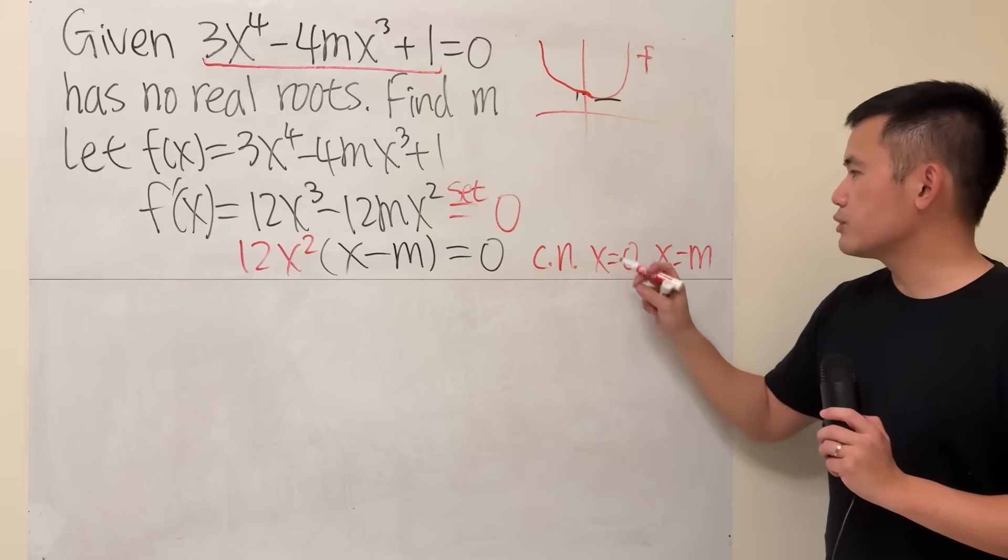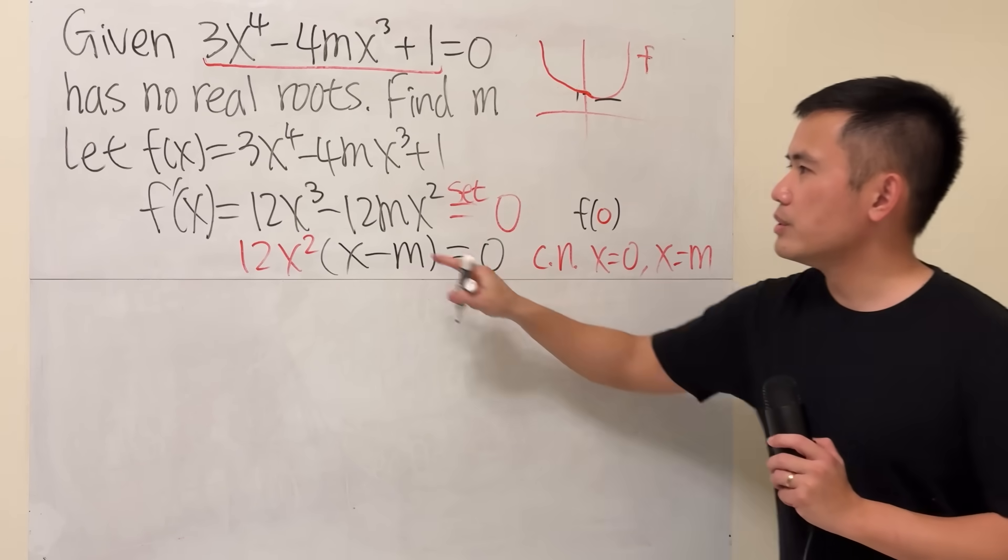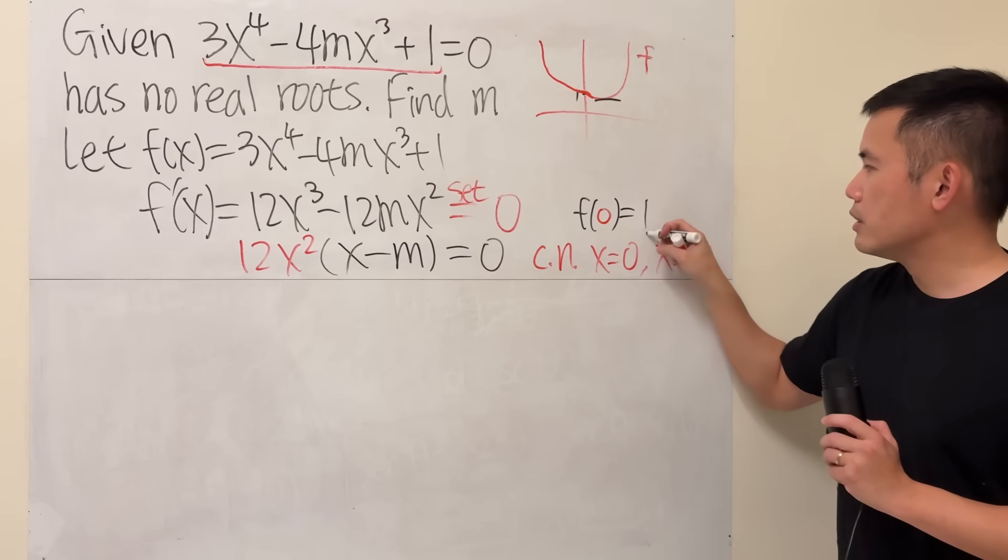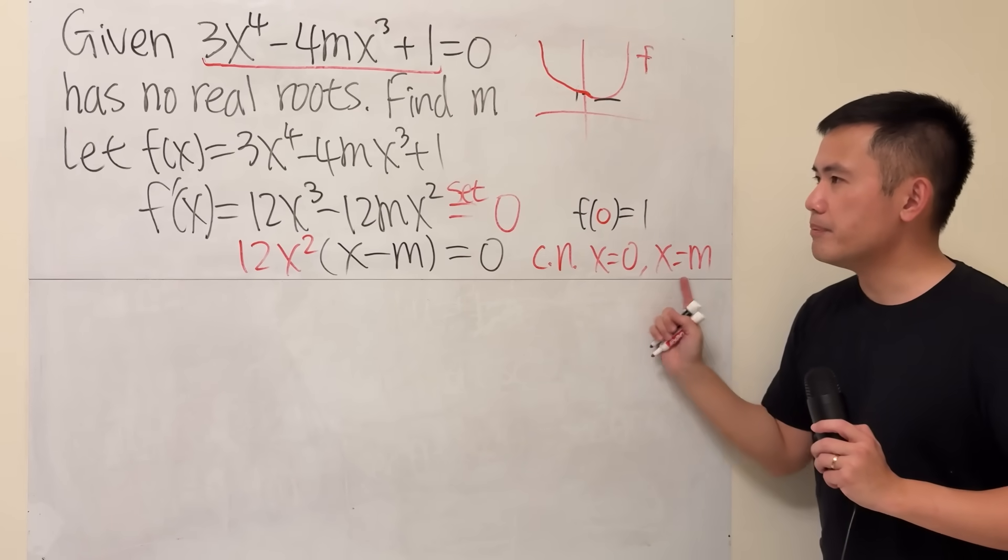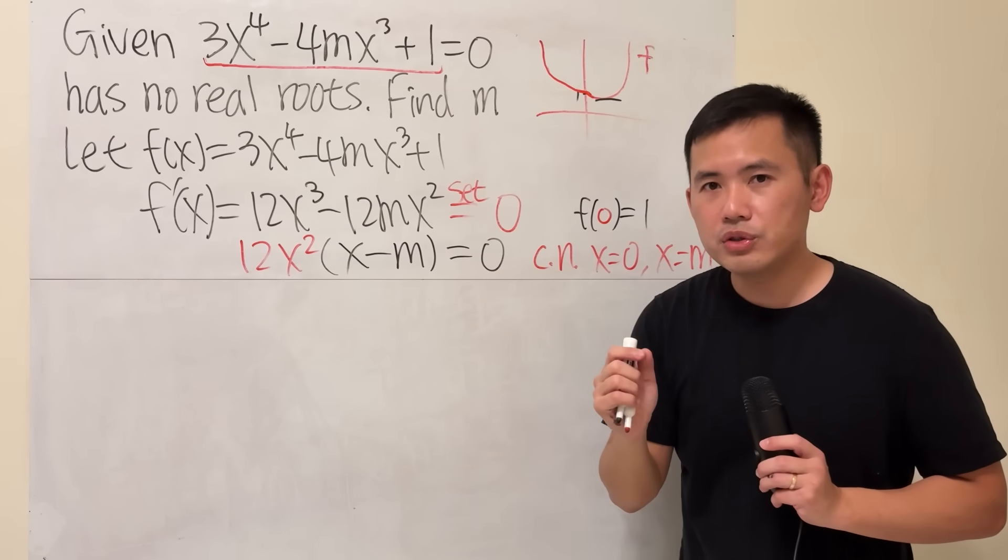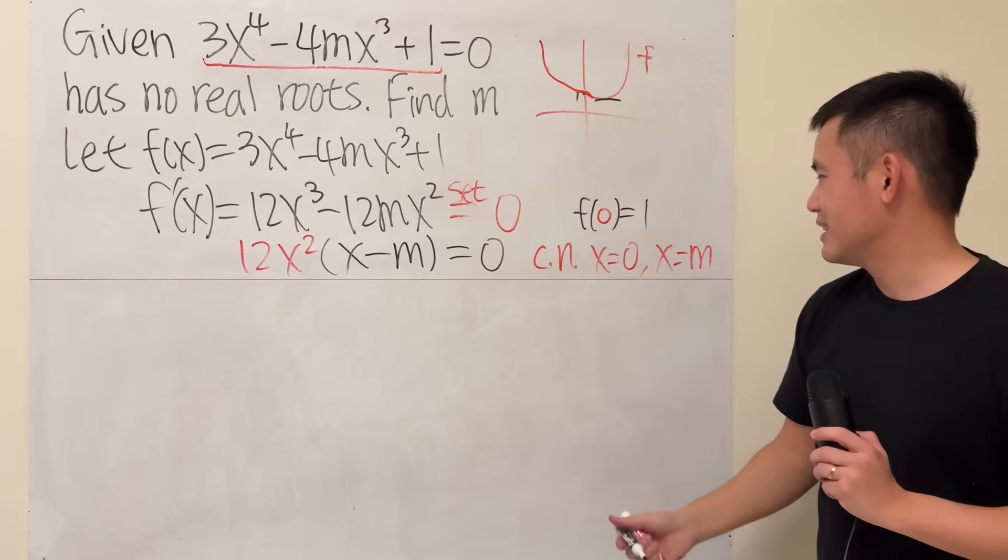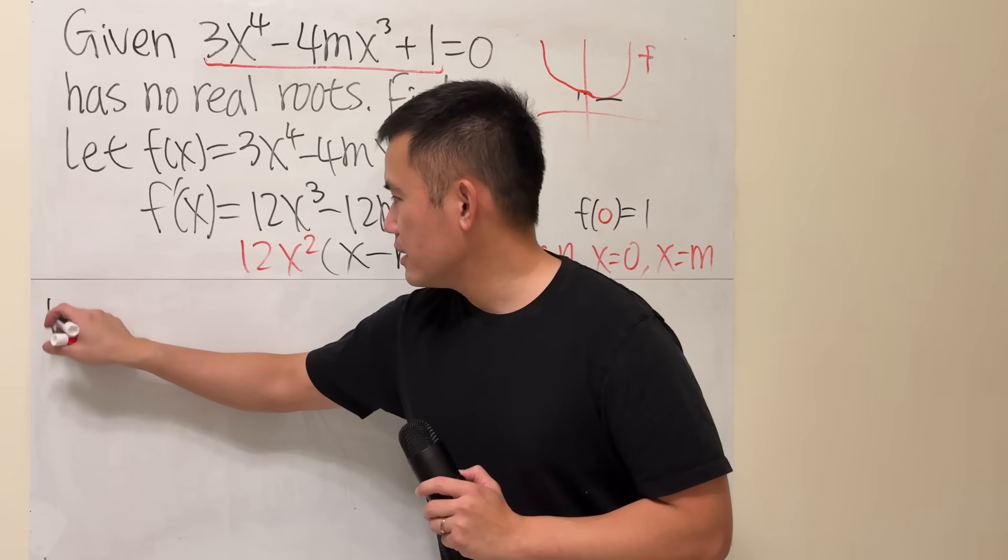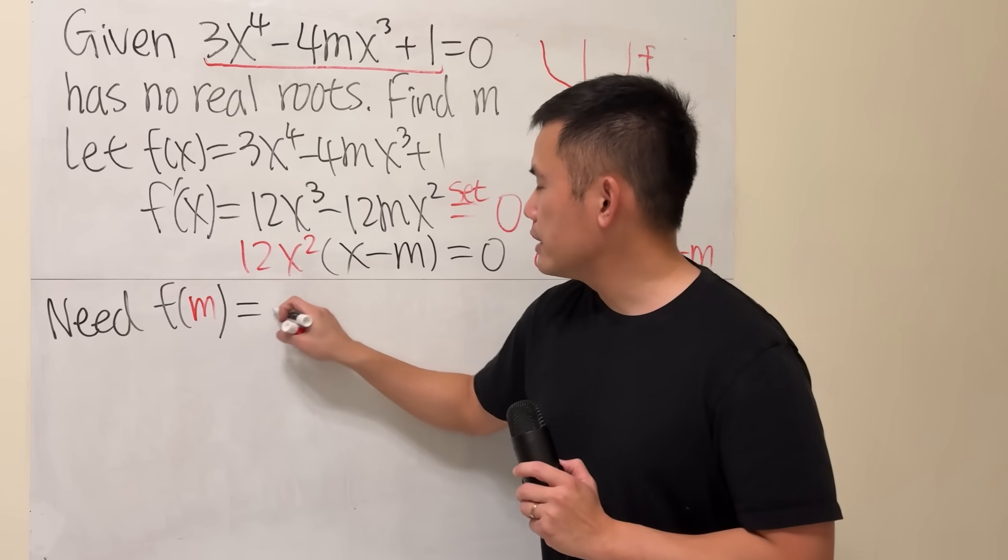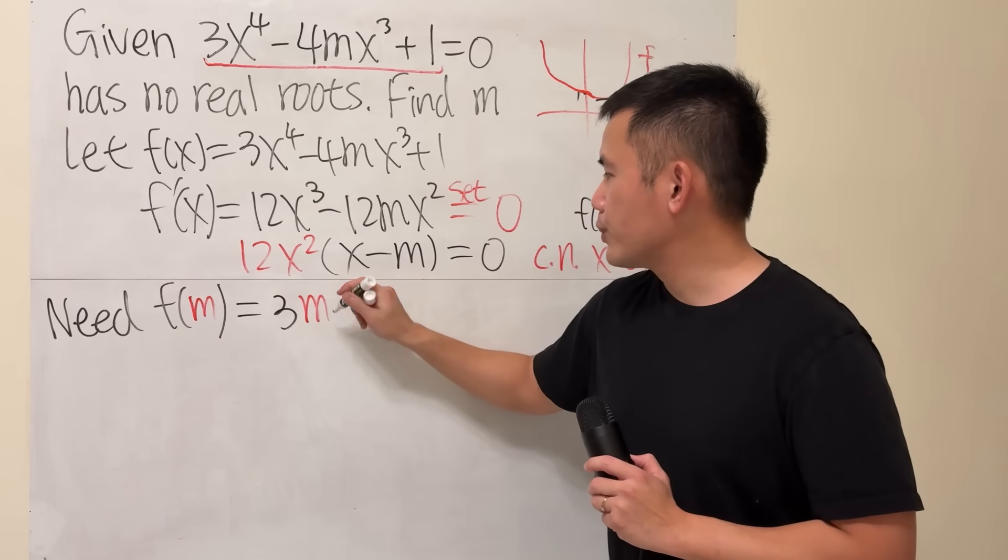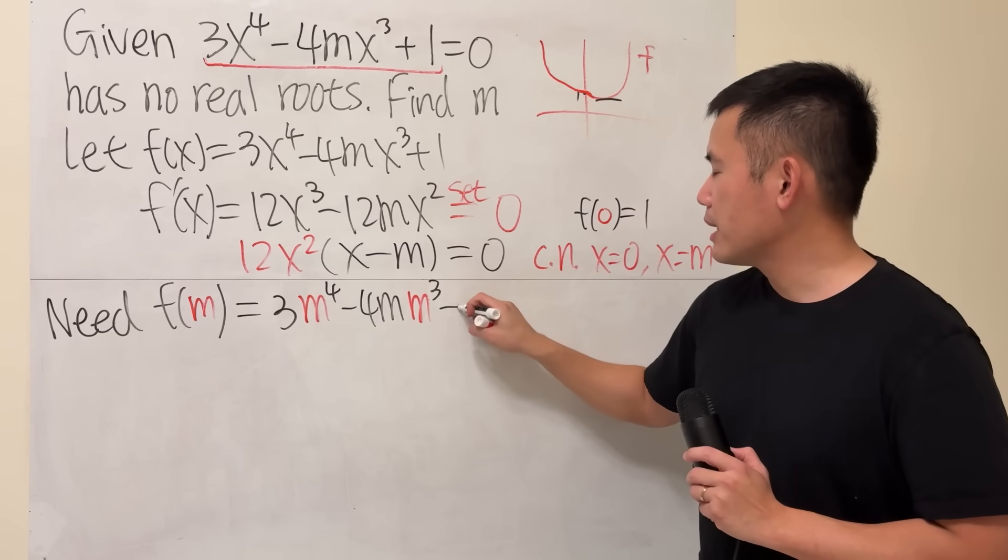We don't have to consider this because right here, f of 0, plugging 0 into all this x, we get 1, so we have no worries. But if we plug in m into the function, we will have to make sure the y value is above the x-axis. So we need f(m) to be greater than 0.